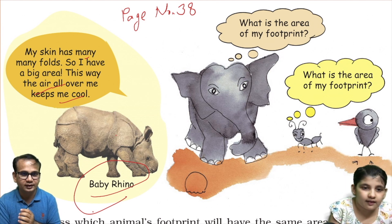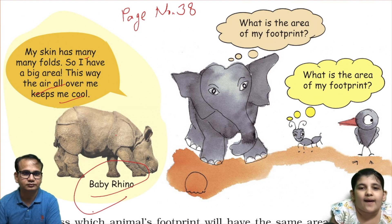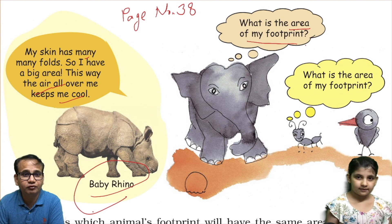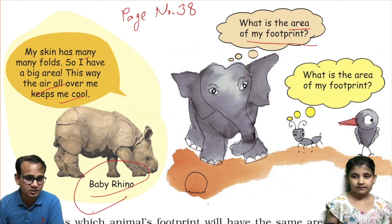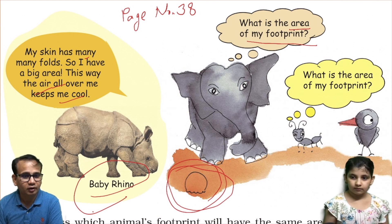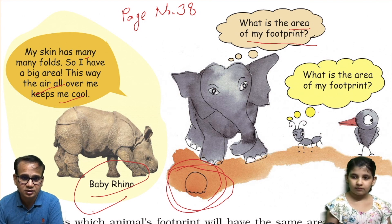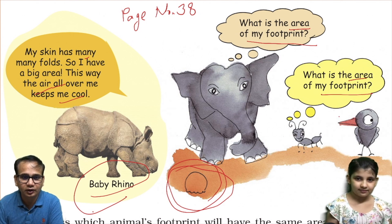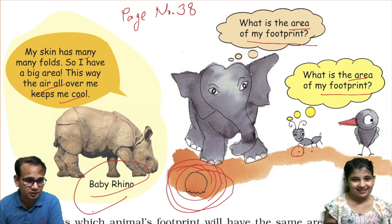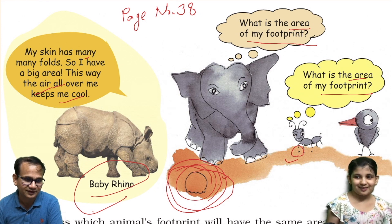Now let us see what this elephant is telling. He is asking: what is the area of my footprint? He is asking us to measure his footprint area. And this ant is also asking: what is the area of my footprint? We have to measure this area and that area. The elephant's footprint is big — of course the elephant's footprint is big.